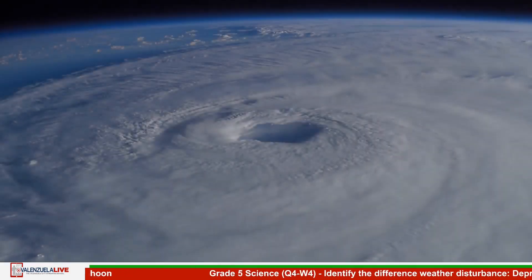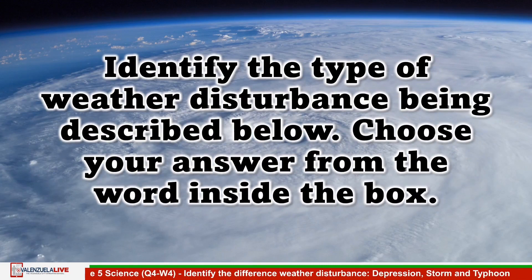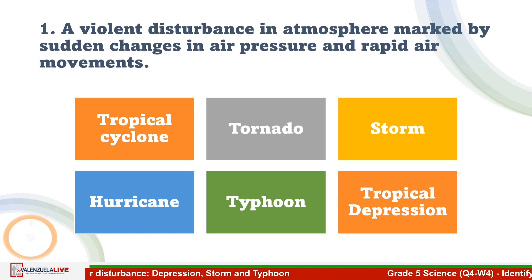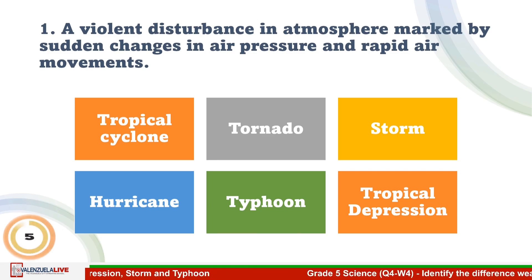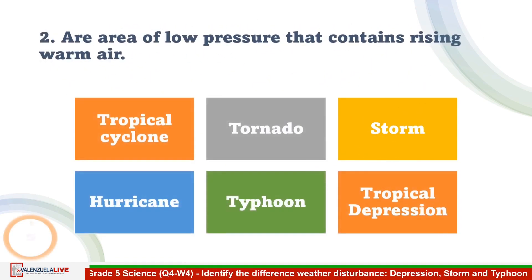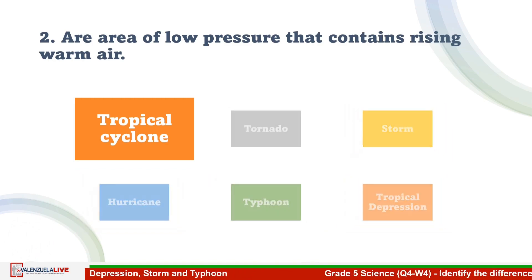Let's check how you understand our lesson for today. Identify the type of weather disturbance being described below. Choose your answer from the words inside the box. Number 1: A violent disturbance in the atmosphere marked by sudden changes in air pressure and rapid air movements — the answer is storm. Number 2: An area of low pressure that contains rising warm air — the answer is tropical cyclone.